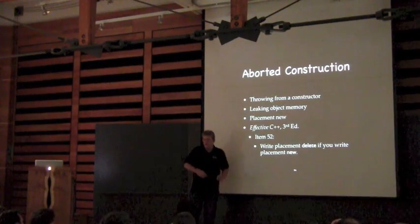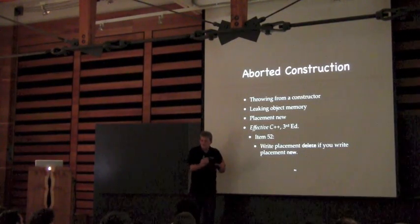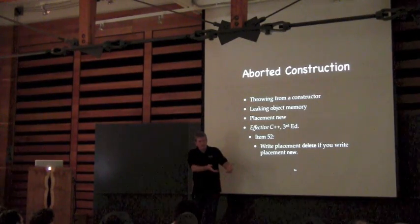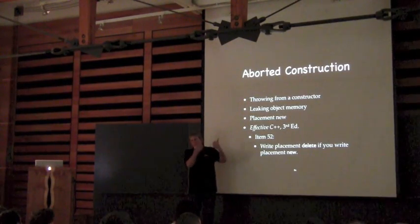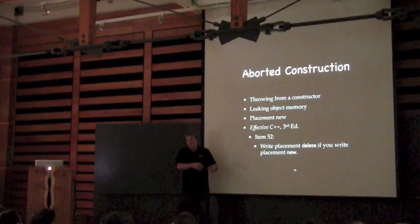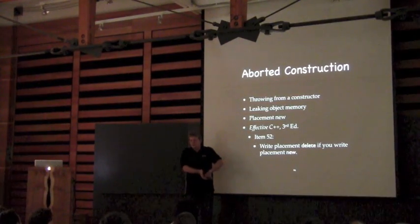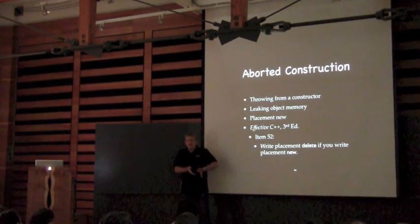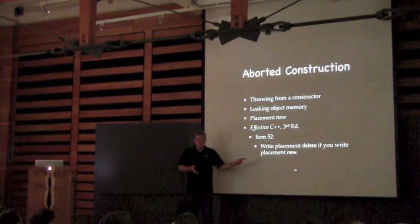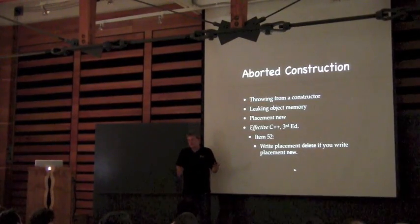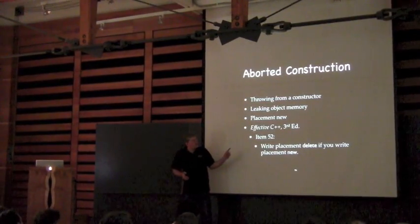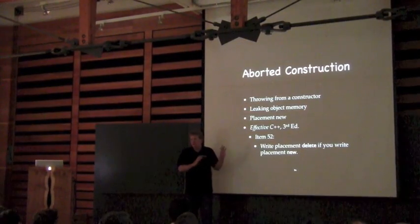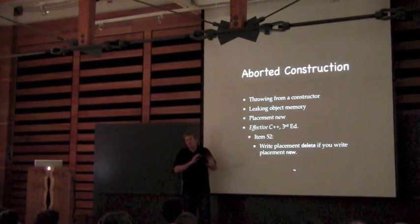What Scott Meyers said is: whenever you call the new operator, it's responsible for reclaiming the memory of an object if you throw in the constructor. So if you call new, it allocates the object on the heap, starts base classes and data members, and then if the body of the constructor throws, new is going to let the throw propagate but it's going to clean up the memory. The problem is if you're calling placement new, it doesn't know where the memory is coming from.